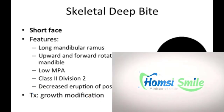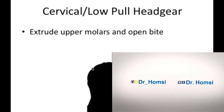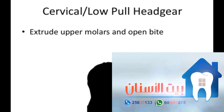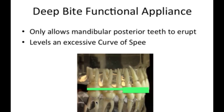This is going to require growth modification. The opposite of high pull headgear would be low pull headgear — instead of pulling up and back, we pull down and back — to extrude the upper molars and open the bite. This actually has a reasonable prognosis. For the bite block approach, we'd use a deep bite functional appliance: instead of blocking the posteriors, we block all the anteriors and the maxillary posteriors, and allow only the mandibular posteriors to erupt, essentially leveling an excessive curve of Spee as the face height increases during treatment.